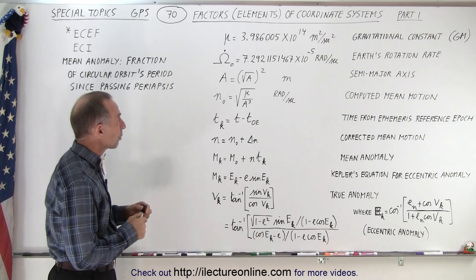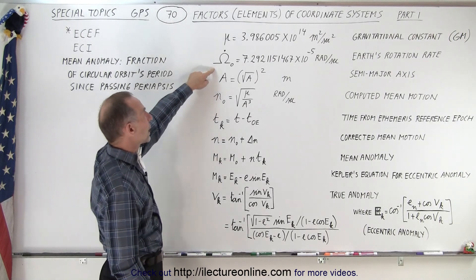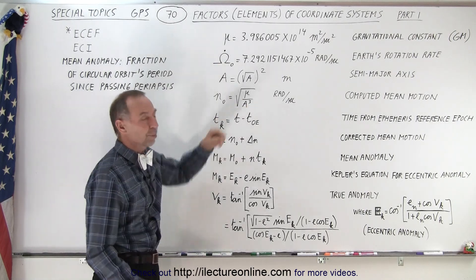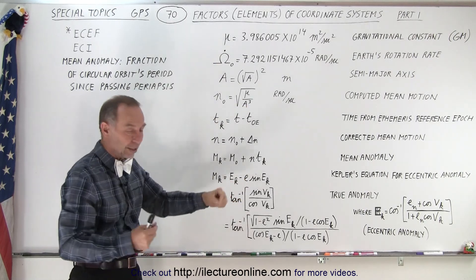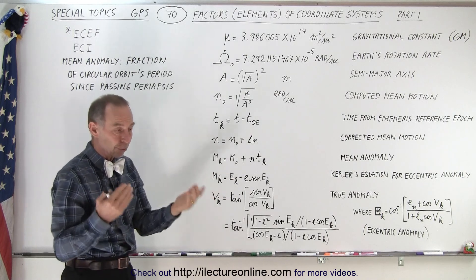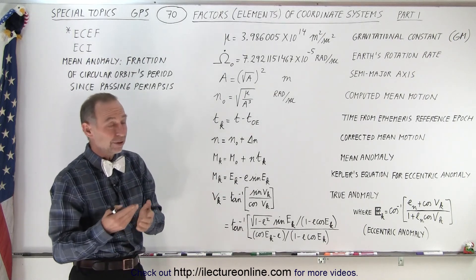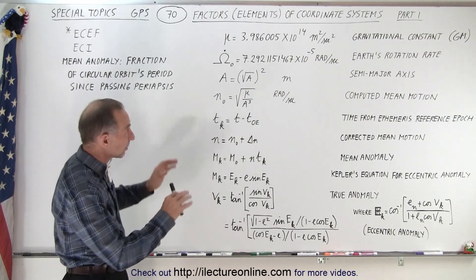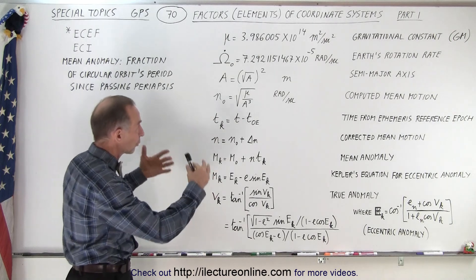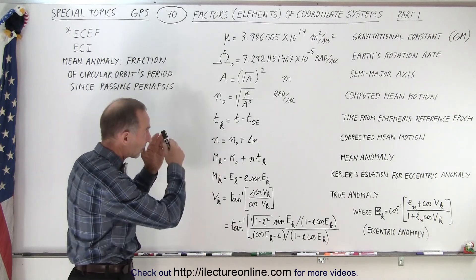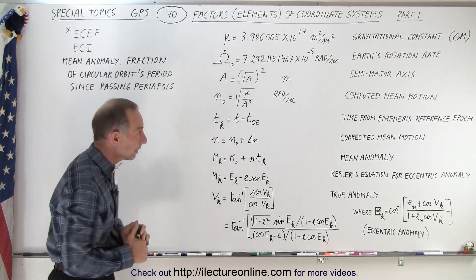The next one is what we call the Earth's rotational rate in radians per second — how fast is the Earth rotating. We know that the Earth rotates in approximately 86,160 seconds, and so that is then converted to radians per second. Of course, much more accurate than that.